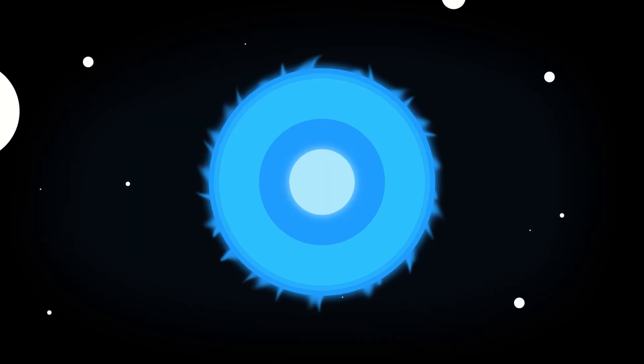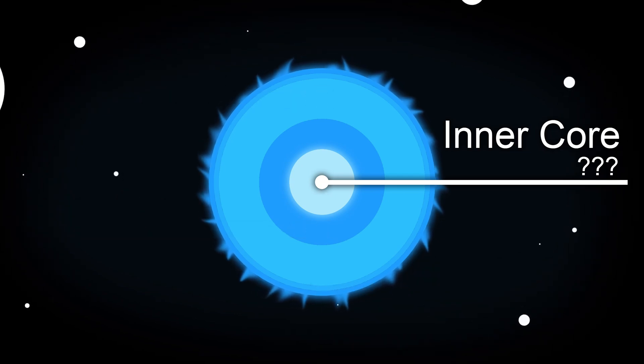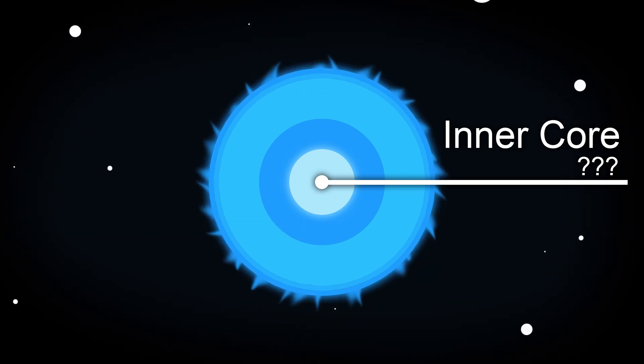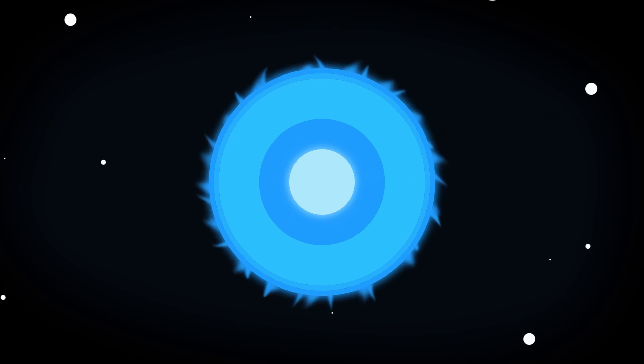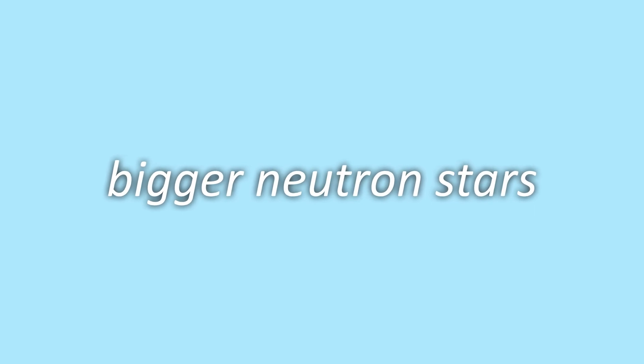Now, let's take a look inside a neutron star's core. Scientists don't really know what's in a neutron star's core. But there are two models that describe what may be in them. The first model, which is more likely for less massive neutron stars, says that the core consists of neutrons. The second model, which is more likely for more massive neutron stars, says that the core consists of a sea of quarks.